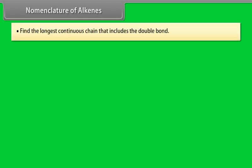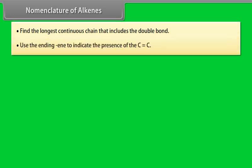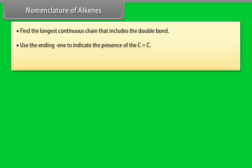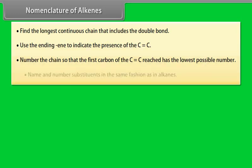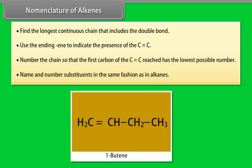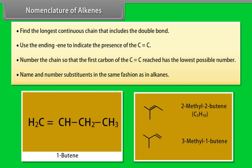Nomenclature of alkenes. Step 1: Find the longest continuous chain that includes the double bond. Step 2: Use the ending -ene to indicate the presence of a carbon-carbon double bond. Step 3: Number the chain so that the first carbon of the carbon-carbon double bond has the lowest possible number. Step 4: Name and number substituents in the same fashion as in alkanes. This is 1-butene, and these are 2-methyl-2-butene and 3-methyl-1-butene.